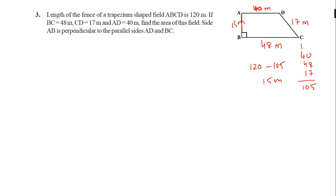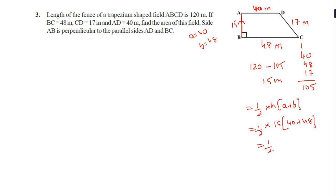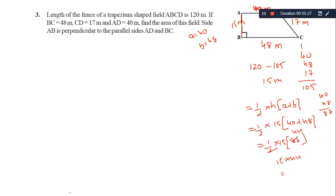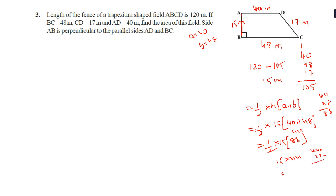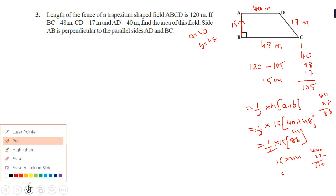Now we have to apply the formula: half into h into (a plus b). Here h is 15, a is 40, and b is 48. So half into 15 into (40 plus 48) equals half into 15 into 88. Cancelling gives 15 into 44. That is 440 plus 220, which equals 660. So the answer must be 660 meter square.